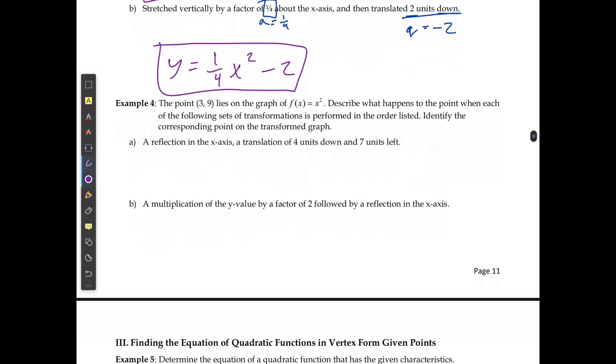For Example 4, the point 3 and 9 lies on the graph of f of x equals x squared. If we're describing what happens to the point when each of the transformations is performed in the ordered list, and identify the corresponding points. Well, if I am reflected in the x-axis, y becomes negative.